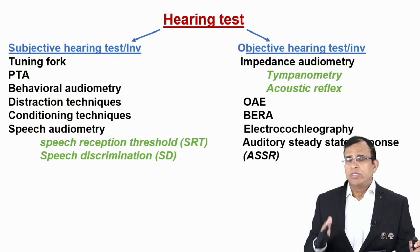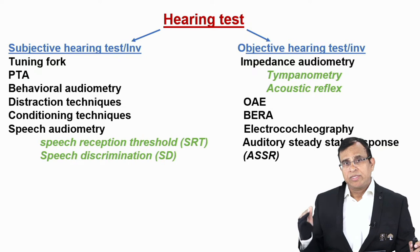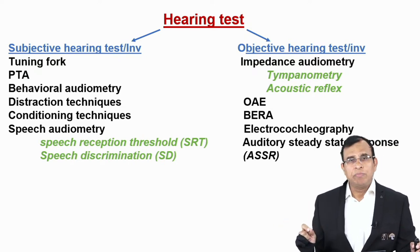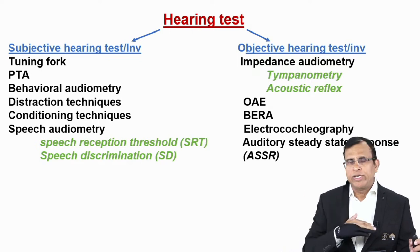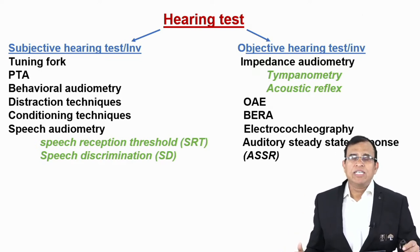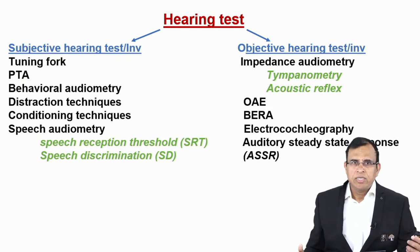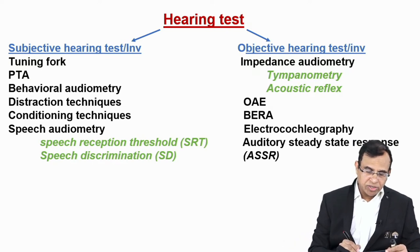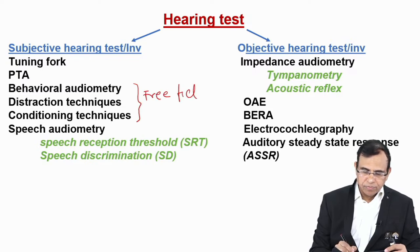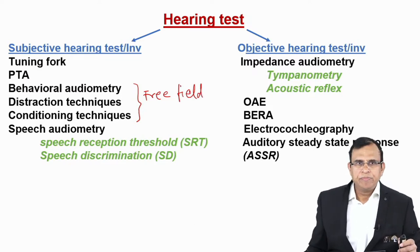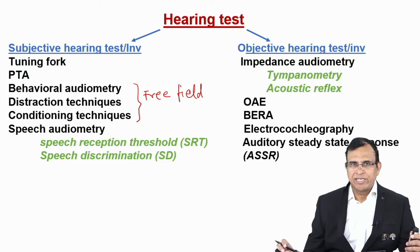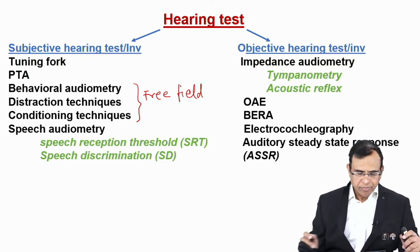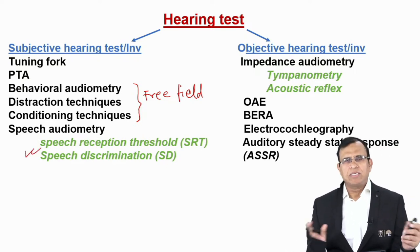In patients where you cannot do subjective tests, you do objective tests. Objective tests are all computerized — you put a probe, switch on the computer, get a graph, and interpret it. Whether the person is sleeping, in a coma, or a child, you can do objective tests. Important subjective tests include: tuning fork test, pure tone audiometry, behavioral audiometry, distraction audiometry, and conditioning test. The last three come under free-field audiometry. Speech audiometry also falls here, with two subtypes: speech reception threshold (SRT) and speech discrimination (SD).